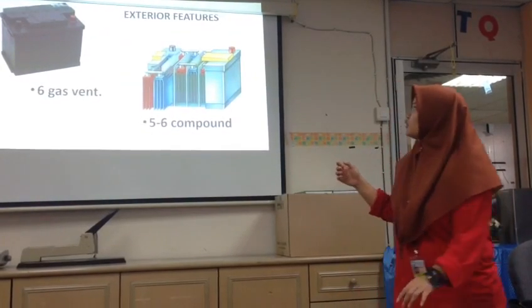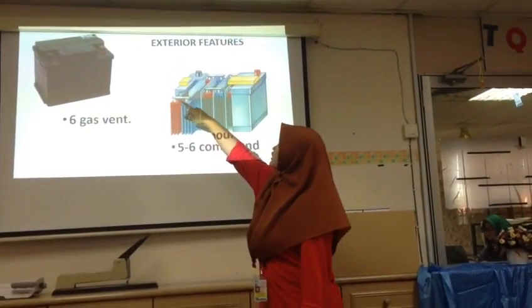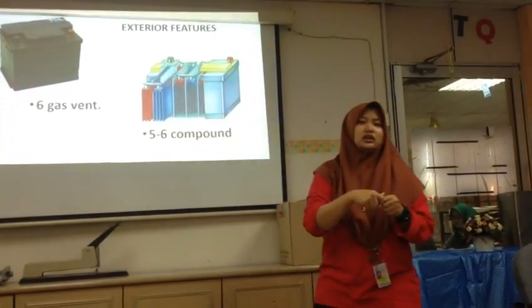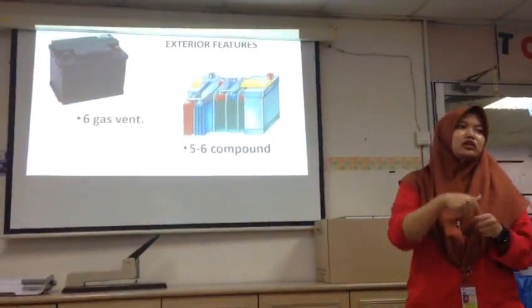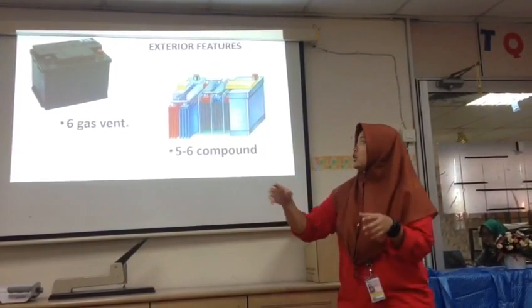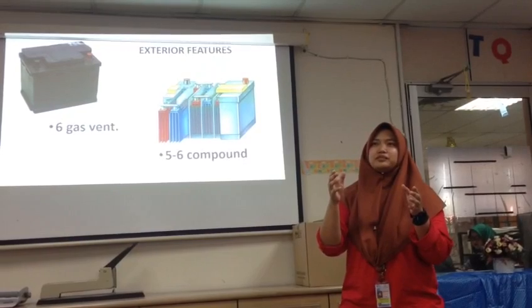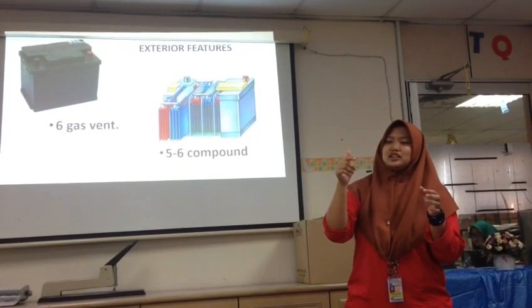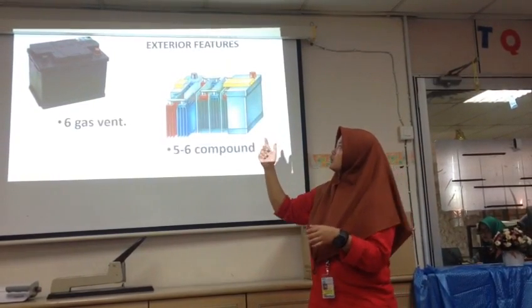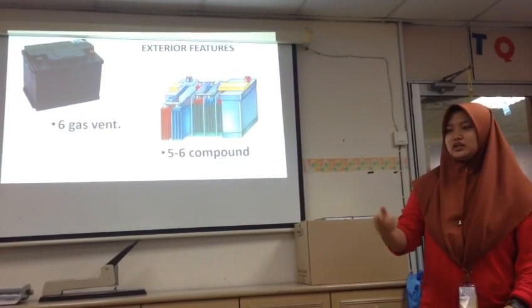This is the entire feature. We have six gas vents, which is six circles there. We can put the liquid — the lead acid — over there. This is four to six compounds in that box, which is the liquid part. The liquid part is in there, which is we always use the lead acid battery.